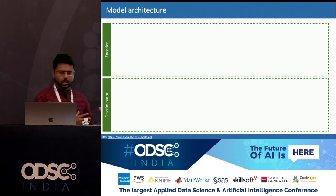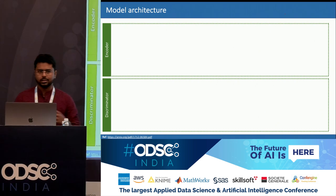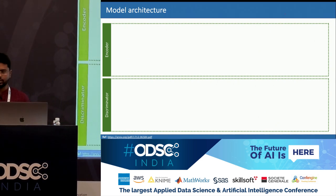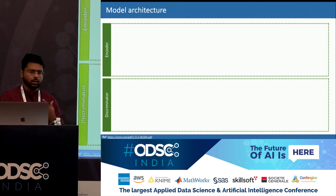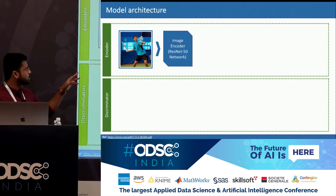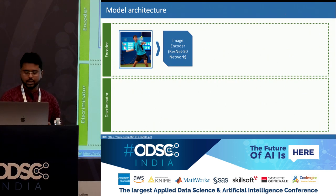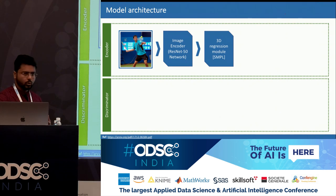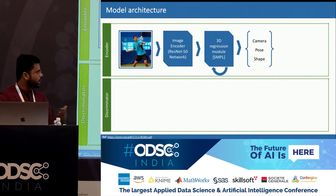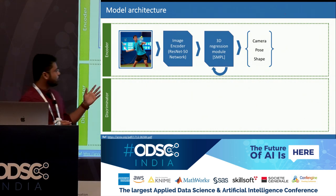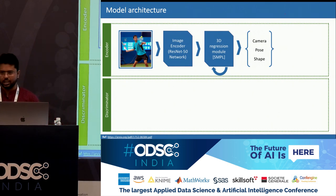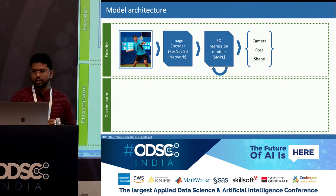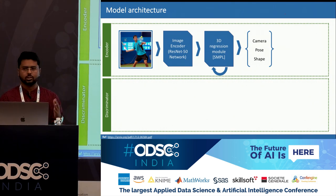The framework has an encoder and a discriminator. The encoder predicts this D-dimensional representation given a 2D image. The discriminator, given those D-dimensional representations, will say whether it looks like a human being or not. The encoder uses a 2D image given to an image encoder trained on ResNet architecture, which gives a latent space representation. That latent representation is given to a 3D regression module called SMPL — Skinned Multi-Person Linear model. SMPL predicts the D-dimensional representation of the 3D character.